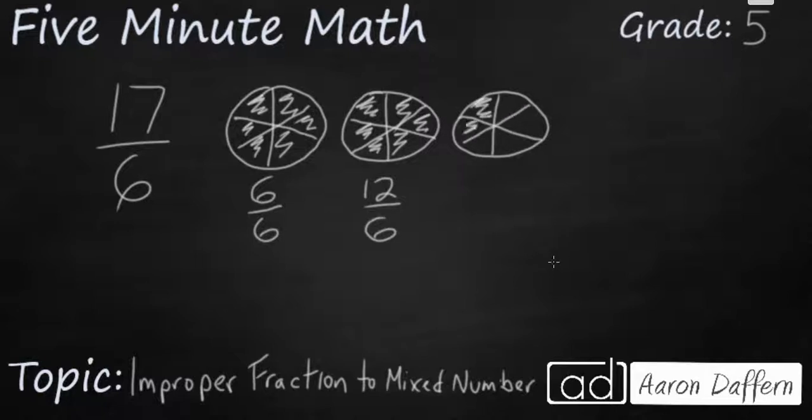13, 14, 15, 16, 17. So I've got 17 sixths. That's what it looks like.